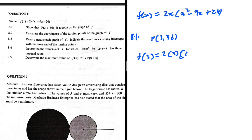Substituting x = 3: we get 2(3) multiplied by (3² - 9(3) + 24), which is 6 multiplied by (9 - 27 + 24) = 6 × 6 = 36. So indeed P(3, 36) is a point on this function. Two marks.